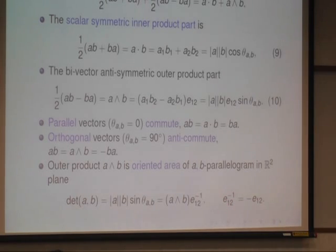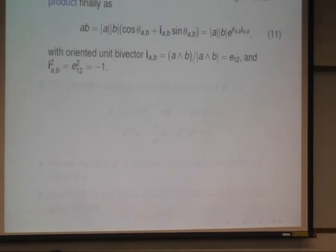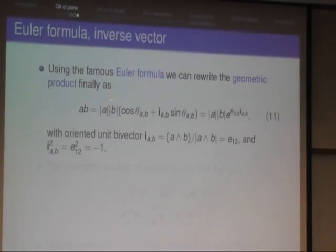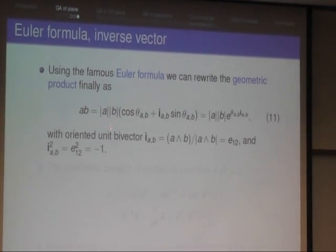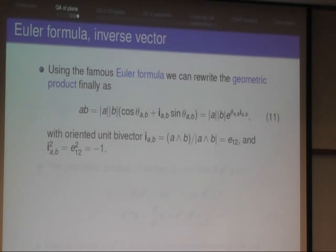Now we can use the famous Euler formula. Take the inner product part and write it in terms of the length of the two vectors and the outer product part. I write the bivector E12 as I_AB, specifying the plane of the vectors A and B. In two dimensions there's only one plane so I don't need to do it. But in higher dimensions two vectors make a plane in a higher dimensional space and this plane has its own bivector. If I have cosine theta_AB, I squares to minus 1, and sine theta_AB, I can apply the famous Euler formula and write it in exponential form here.